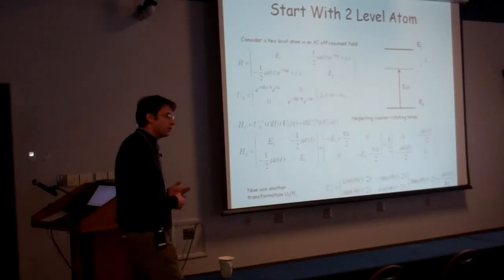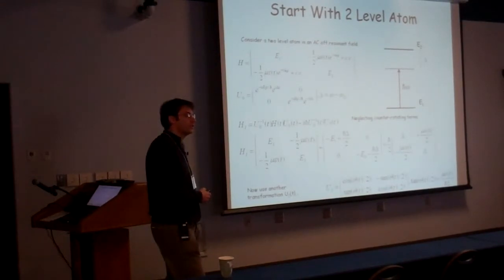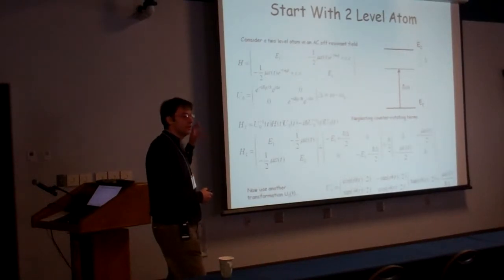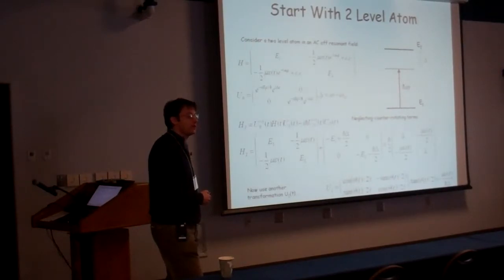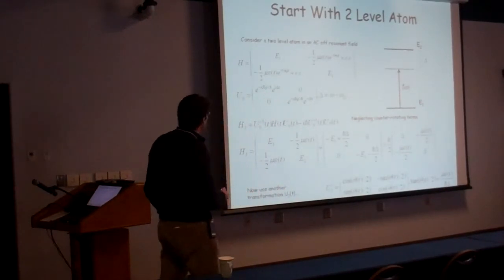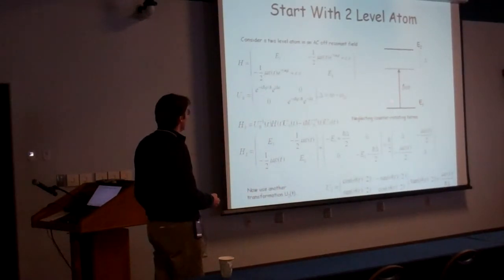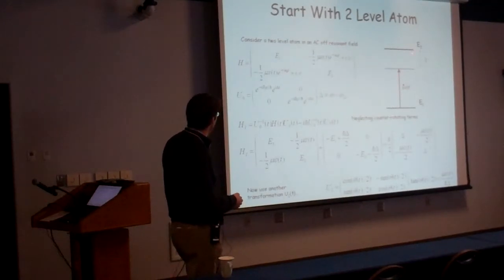You guys have already heard about a two-level atom and how the light shifts come about, but I want to go over it again in a slightly different framework so that I set up some notation. Then we'll see how this becomes interesting when you have more than two levels. So, starting with a two-level atom and an AC off-resonant field with some detuning delta, photon energy ℏω, and state energies E1 and E2.